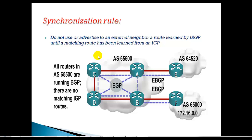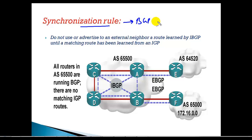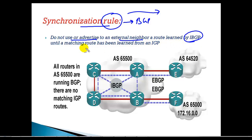In this video we are going to learn about the synchronization rule. If you remember, in all our basic labs we use a command called 'no synchronization'. Why are we using that command? Why do we need to disable it? If I don't do that, what exactly happens? The synchronization rule is a default rule which is enabled in BGP in the older versions. If synchronization is enabled, it says do not use or advertise any route to an external BGP neighbor which is learned from your IBGP...